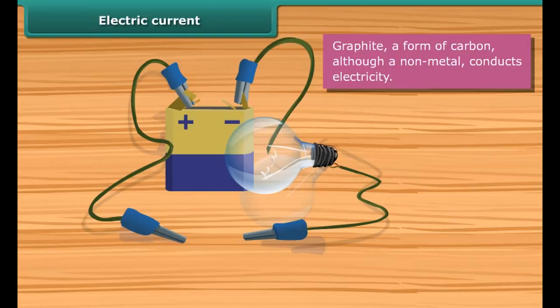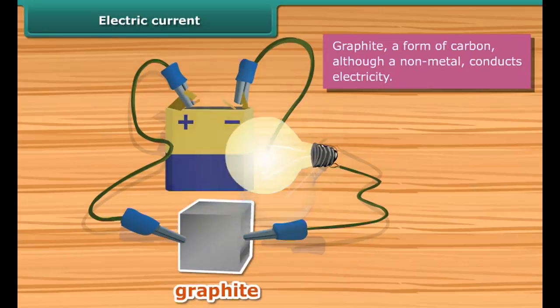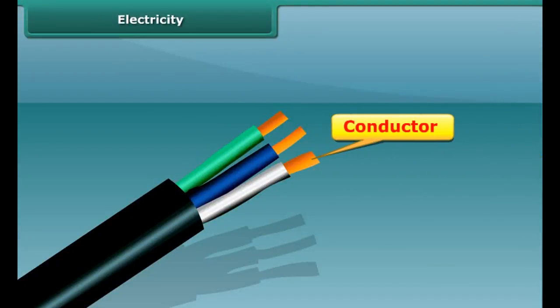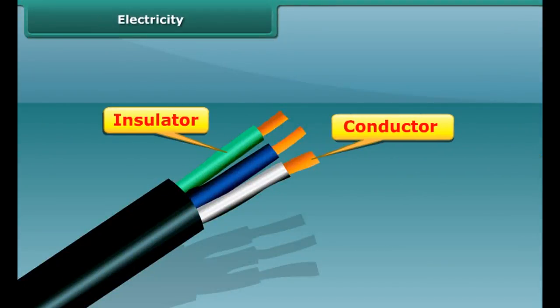The materials through which electric current does not flow are called insulators, also known as non-conductors of electricity. Paper, wood, plastic, cloth, eraser, and rubber are insulators. Pencil lead is made of graphite — it is a form of carbon. Although it is a non-metal, graphite is a conductor of electricity.